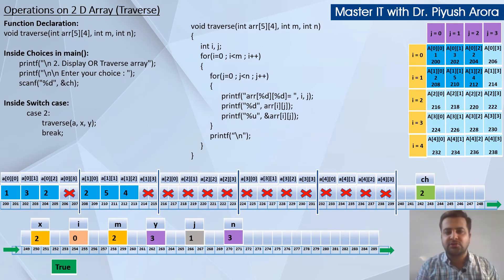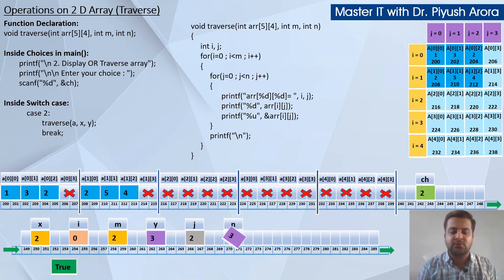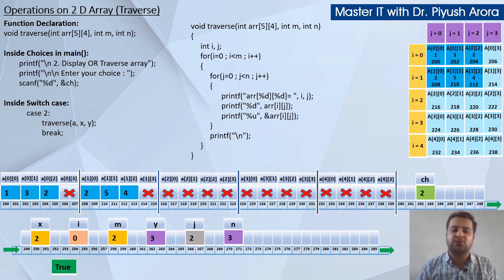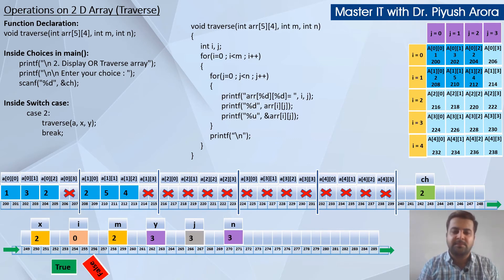j becomes 2 — check the condition: 2 is less than 3, condition is true, so it will go inside the loop again. These 3 statements print: a[0][2], element is 2, and address is 204. Next, j++ makes j become 3. Check the condition: 3 is less than 3 — this is false. When the condition is false, the internal loop terminates. After the closing bracket, printf with newline '\n\n' is executed because we need to go to a new line.